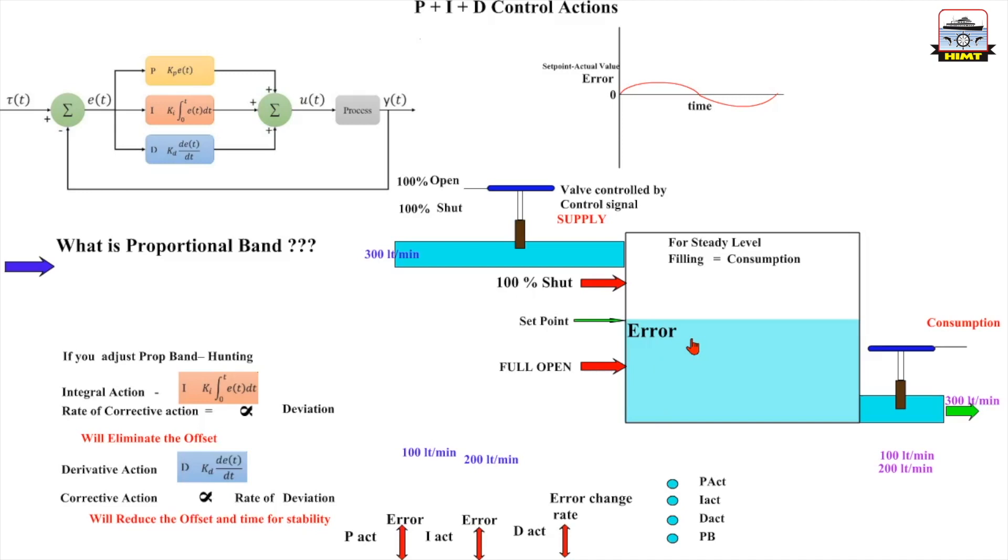On the basis of this prediction, this valve will continue to open more than what the P action would have done. It is anticipating a big drop in level. The outcome of this derivative action is that the stability point with or without offset is achieved quickly.